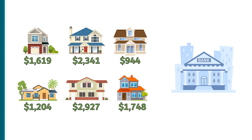Starting in the 1980s, financial institutions started to bundle these mortgage payments together into something called mortgage-backed securities, which they could sell to investors. People with extra money looking to earn a good rate of return could buy these securities. For example, a bank might have lent out $2 million total to people who bought six houses, then bundle those six mortgages together and sell that mortgage-backed security for something above that amount.